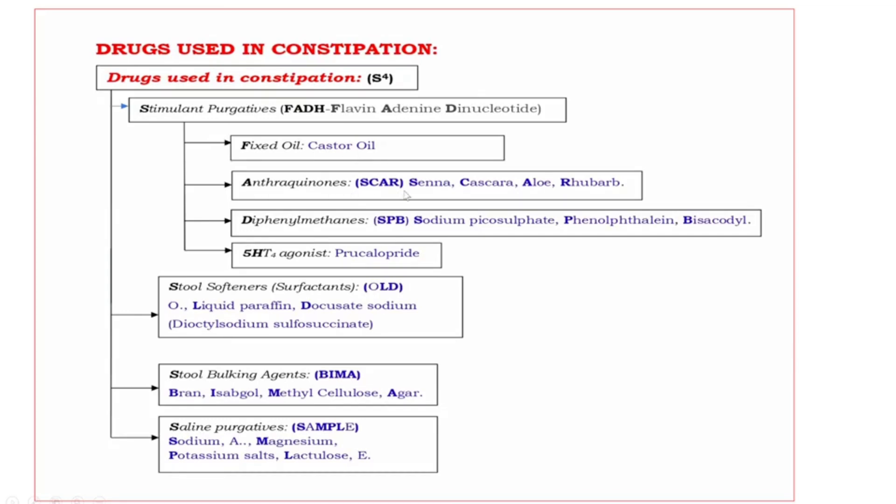Anthraquinone drugs are SCAR. Bold letters are SCAR. S: Senna. C: Cascara. A: Aloe. R: Rhubarb.